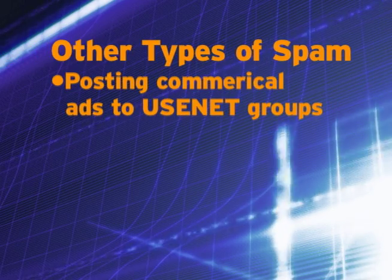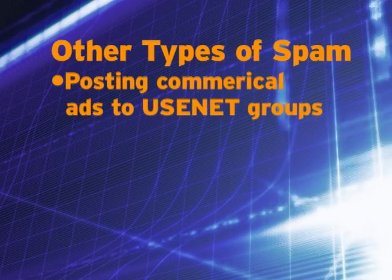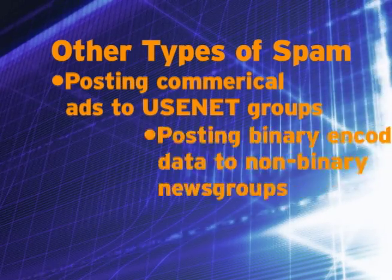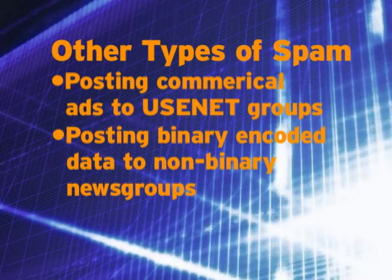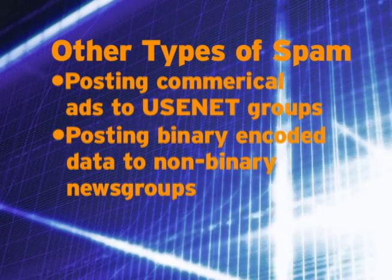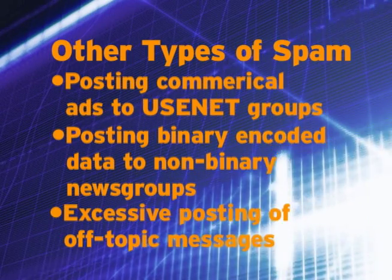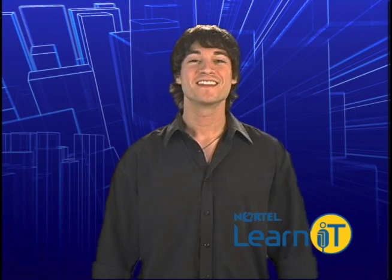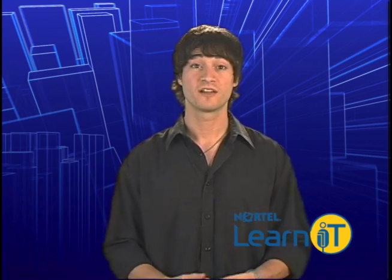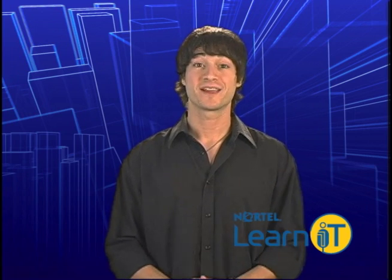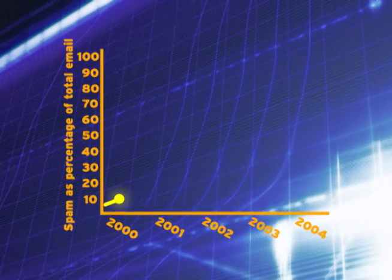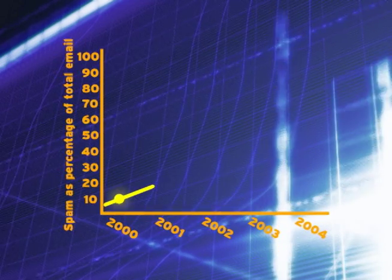Other types of spamming include posting commercial ads to Usenet newsgroups that do not permit it, posting articles containing binary encoded data to non-binary newsgroups, and excessive and repeated posting of off-topic messages to newsgroups. Industry Canada, a federal department of the Canadian government, investigated spam activity on the internet and found that in the year 2000, spam amounted to about 10% of all email transmitted.